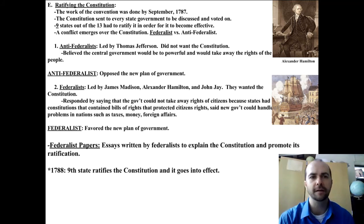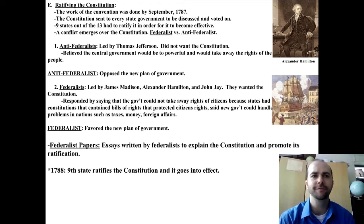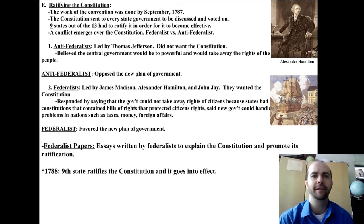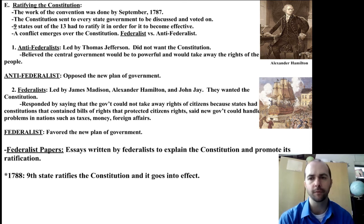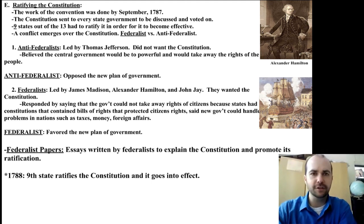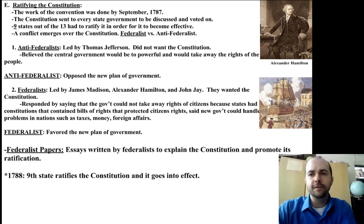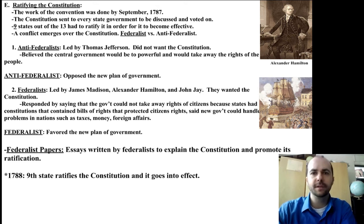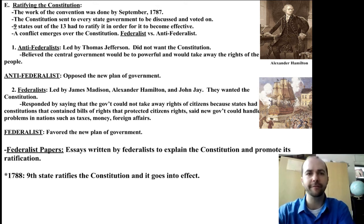After the Constitution was written and approved by the Constitutional Convention, it had to be ratified. Ratified means accepted or passed or put into practice. By September 1787, the work of the Convention had been finished, and the Constitution was sent to every state government to be discussed and voted on. Nine states out of the 13 had to ratify it in order for it to become effective, or the supreme law of the land.